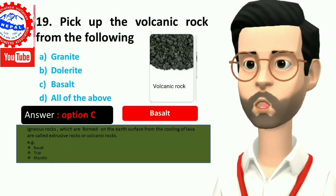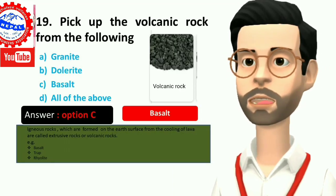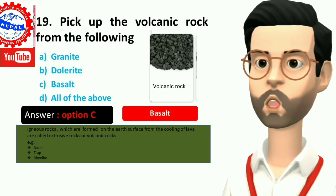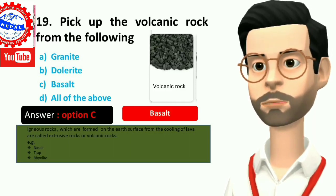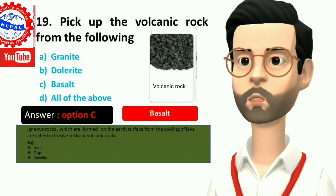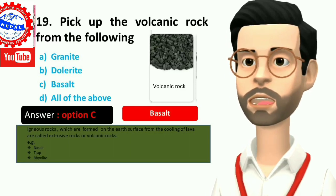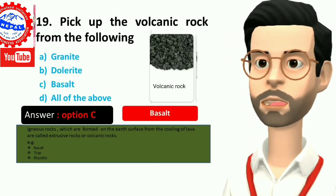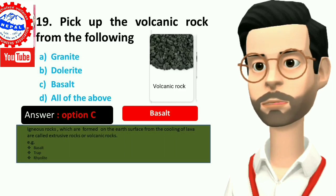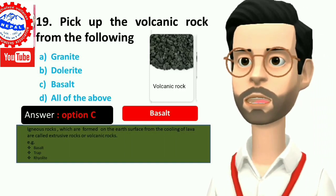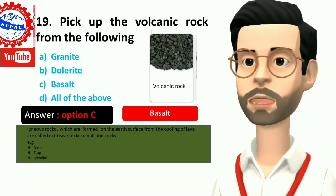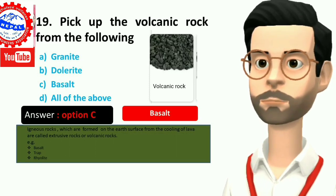Nineteen, pick up the volcanic rock from the following: A) granite, B) dolerite, C) basalt, D) all of the above. Igneous rocks which are formed on the earth's surface from the cooling of lava are called extrusive rocks or volcanic rocks, for example basalt, trap, rhyolite. Answer is option C, basalt.